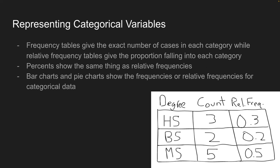So how do we represent categorical variables, the non-numerical ones? Frequency tables tend to give the exact number of cases in each category, and you can also create relative frequency tables that show the proportion falling into each category. Since relative frequency is just a proportion, a percent accomplishes the same thing. You can also use bar charts and pie charts to show the frequencies or relative frequencies for categorical data.